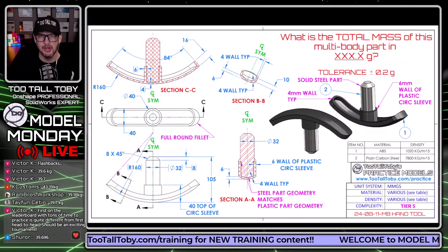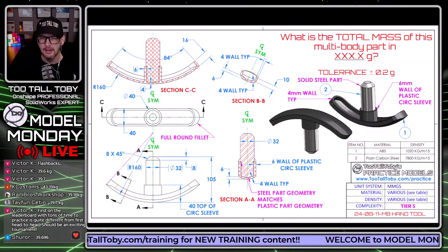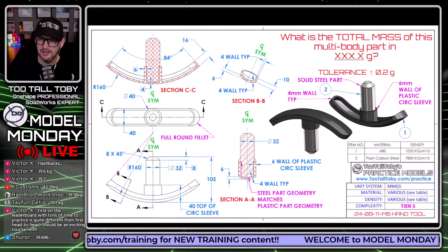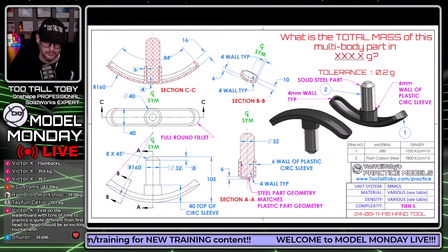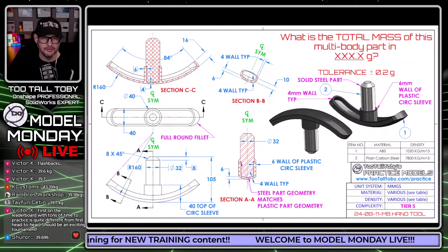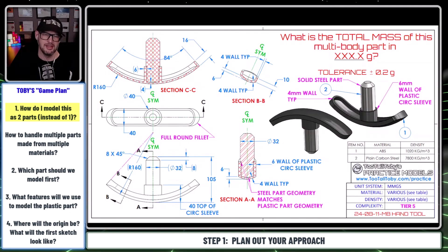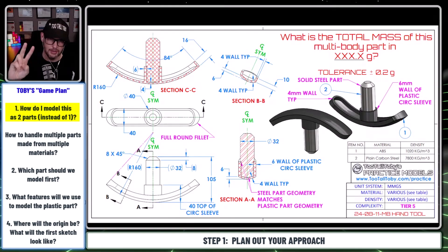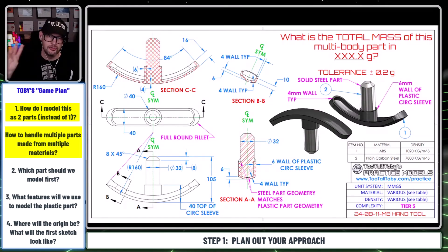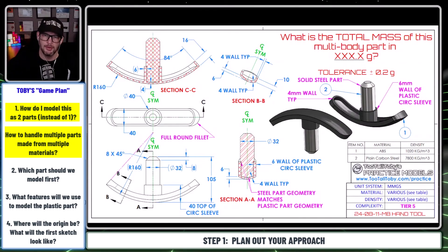This is something that I posted on the YouTube channel last week, a little practice models challenge. What is the total mass of this multibody part in XXX.x grams? And to solve this thing in Onshape, or really in any 3D CAD system, you want to start out by asking yourself some fundamental questions — like how am I going to address the fact that this is two parts instead of one? How do I deal with multibody, multimaterial? Should I make it as two separate parts and then make an assembly, or should I make it as one single part using multibody and multimaterial?